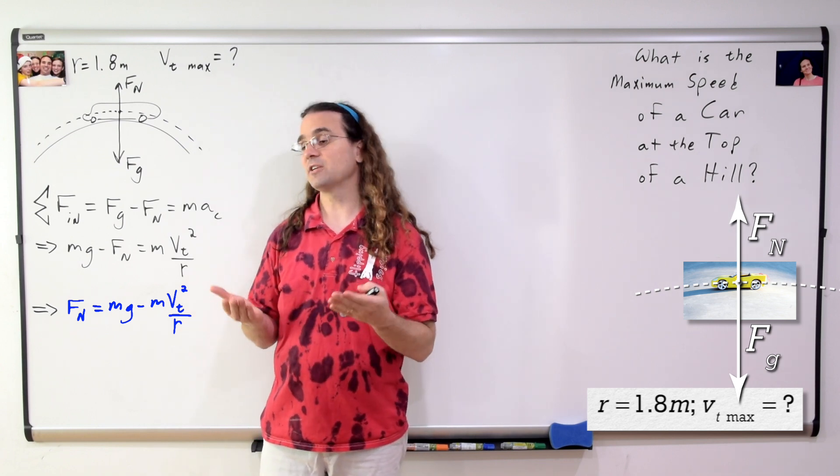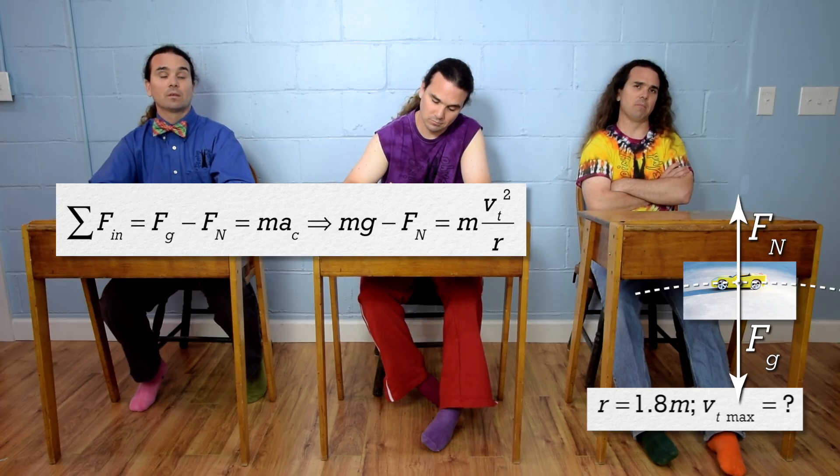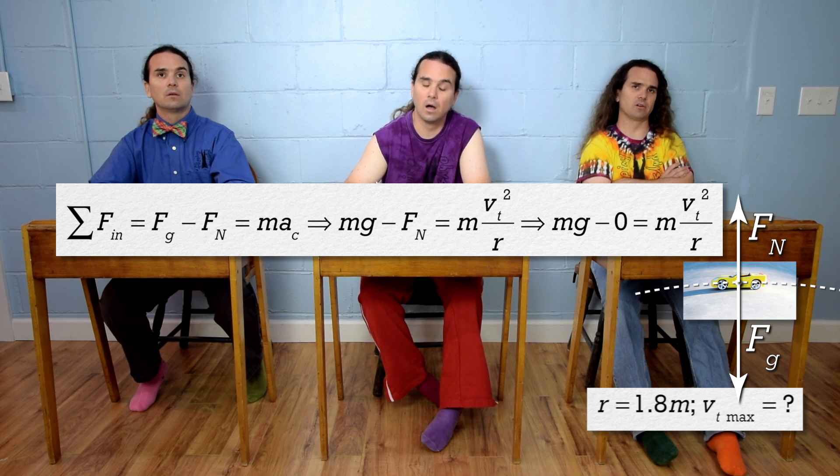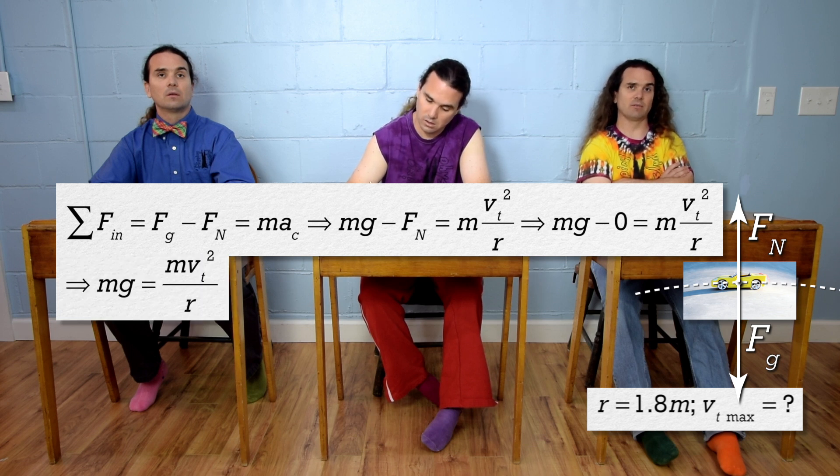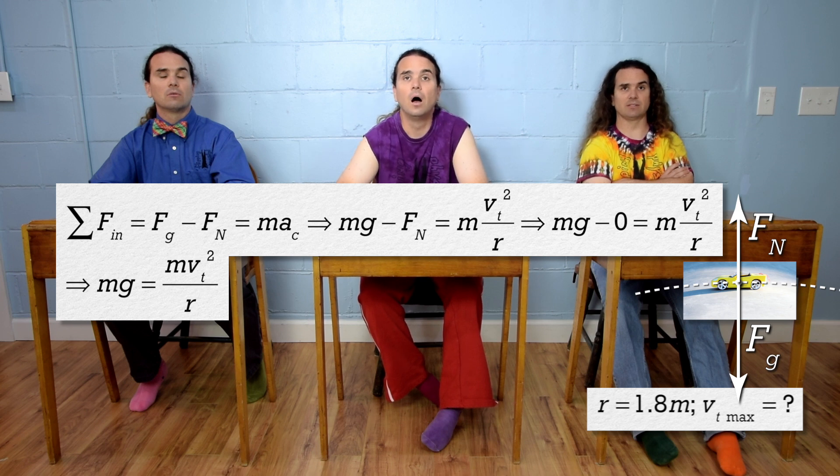Bo, please finish the problem. Well, if at the maximum speed for the car the force normal equals zero, then mass times acceleration due to gravity equals mass times tangential velocity squared divided by the radius.